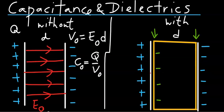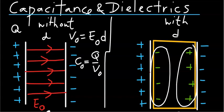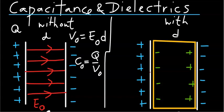Likewise, the surface facing the negative plate will have positive charges induced on it. It is important to note that these induced charges are not of the same magnitude as the original charges on the plate. So, in addition to the original electric field from the positive plate to the negative plate,